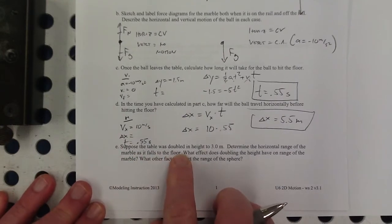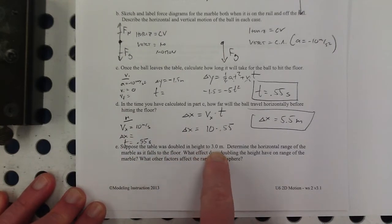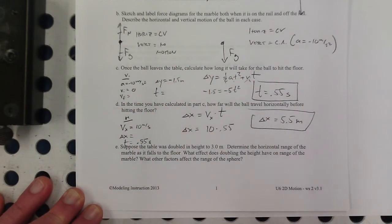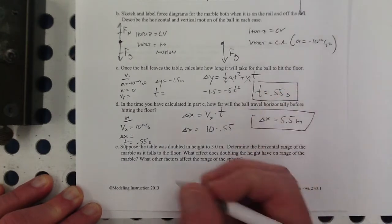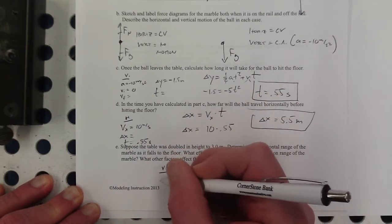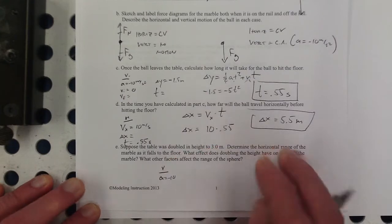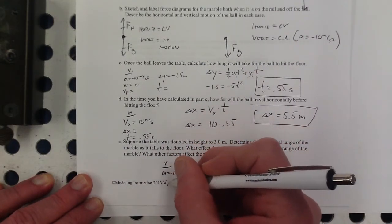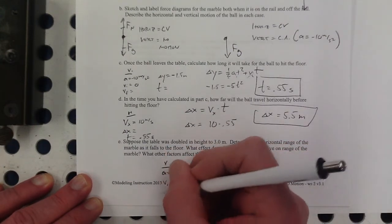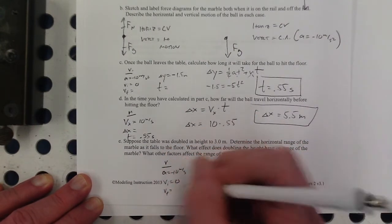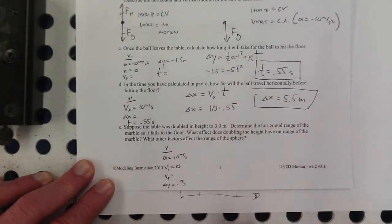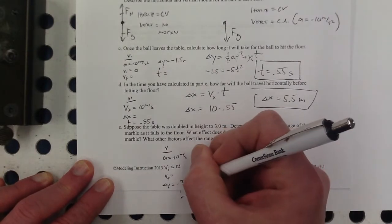Alright, suppose the table was doubled in height to 3 meters. Determine the horizontal range of the marble as it falls to the floor. So if it's 3 meters, what's different here? Well, when I set up this, the acceleration would still be negative 10. The initial velocity in the vertical direction would still be zero. Final velocity, I still don't know and don't care about that. At the delta y, it would be now negative 3 instead of negative 1.5.